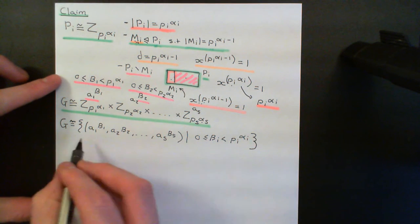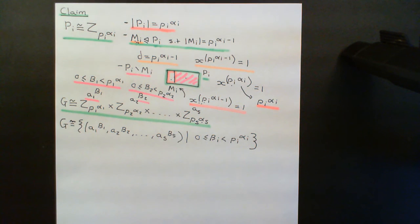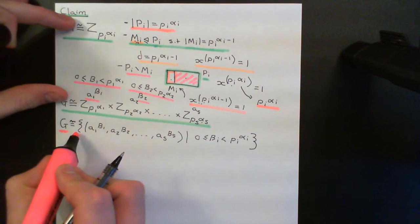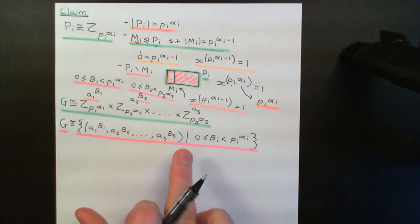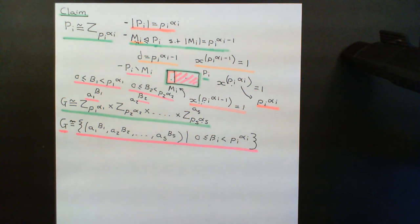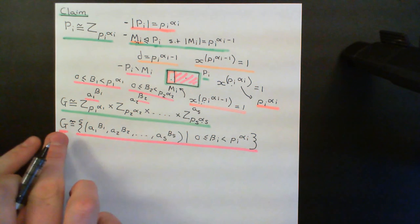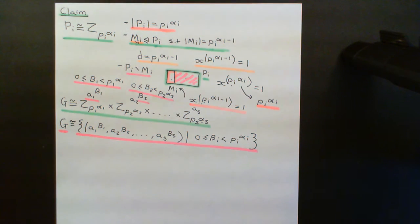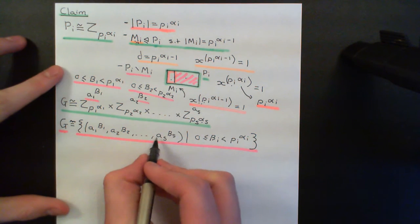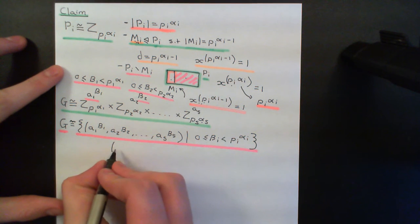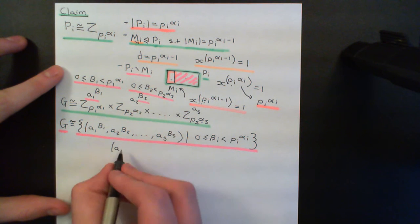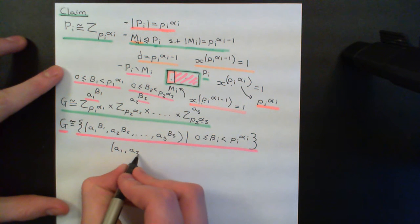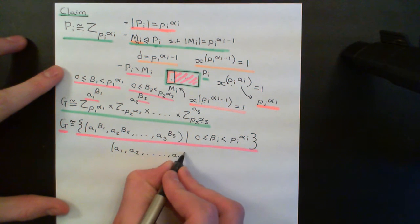The elements are ordered tuples of the form (A_1^β_1, A_2^β_2, ..., A_s^β_s), where each β_i can vary between 0 and strictly less than p_i^α_i. All elements in G are identifiable with one of these s-tuples. So why is this structure a cyclic group? Because if this direct product is cyclic, then G is isomorphic to a cyclic group and is therefore cyclic. I just need to find an element which generates the entire group.